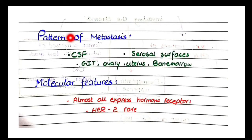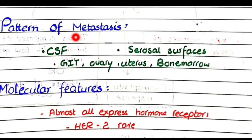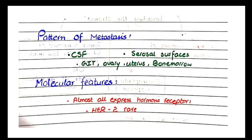There is a specific pattern of metastasis in invasive lobular carcinoma. It usually metastasizes through the CSF of the nervous system, serosal surfaces of the GIT, lungs, or heart, and it metastasizes to the GIT, ovary, uterus, and bone marrow. As for molecular features, invasive lobular carcinomas almost always express hormone receptors — estrogen receptors — and HER2 cancers are rare in this subtype.